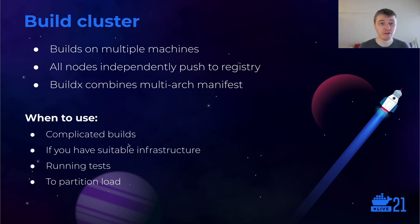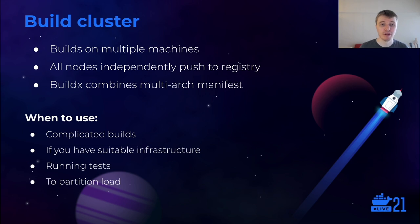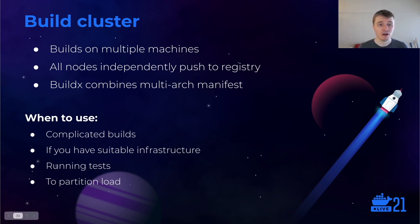In addition to emulation, another method is to create a build cluster in BuildX. You take multiple machines that natively run on different architectures and set them up as a single builder. When you do a build, BuildX will split the build among the machines — all machines will build the commands they understand — and in the end BuildX will combine it all into a single multi-platform image. This is useful for more complicated builds, and it's really the only good way when you want to run tests for all the different architectures as well.